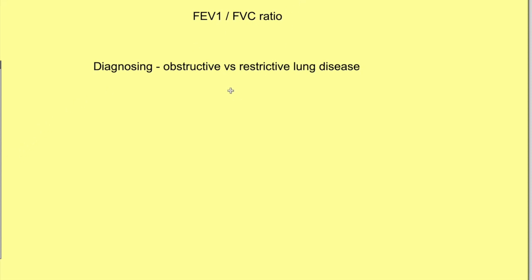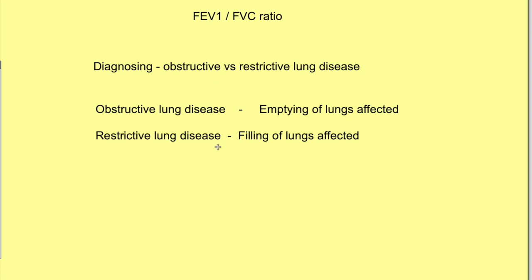FEV1 by FVC ratio is a marker for differentiating between obstructive and restrictive lung diseases. Before we proceed, you should remember that the main problem in obstructive lung disease is expiration - moving air out of the lungs. In restrictive lung disease, there's restriction to lung expansion, so the main problem is inspiration - getting air into the lungs. With this concept, let's try to understand FEV1 by FVC ratio.